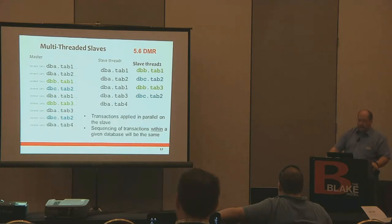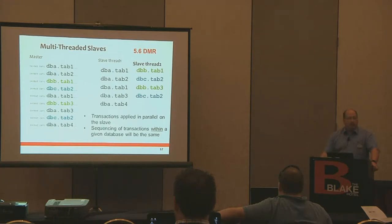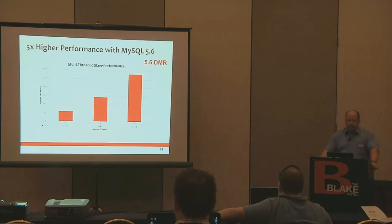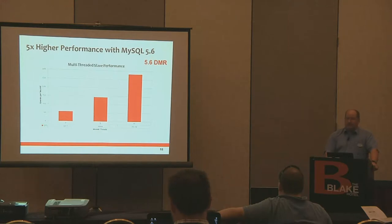On the master, various transactions come in from multiple client threads — color-coded here to show different threads. On slave one, you can see how it takes those transactions and splits them by database: database A gets one thread, database B another, database C another, and so on. As far as performance goes, you can see as much as a five times higher performance using multi-threaded slaves. If you set your worker threads to around 10, depending on your database, you'll see a considerable improvement in slave performance. This is something the industry has asked for for some time, and now we're finally delivering.